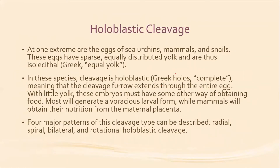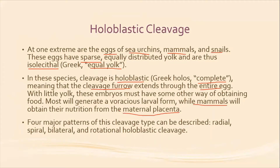The first type is holoblastic cleavage. At one extreme are the eggs of sea urchins, mammals, and snails. These eggs have sparse — meaning very little — but equally distributed yolk, and thus are isolecithal, meaning they have equal yolk. In these species, holoblastic means complete cleavage, meaning that the cleavage furrow extends through the entire egg. With little yolk, these embryos must obtain food another way, such as mammals having a maternal placenta, or other forms having a voracious larval form.